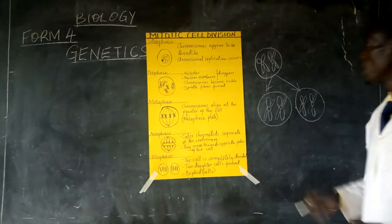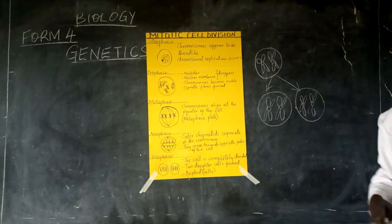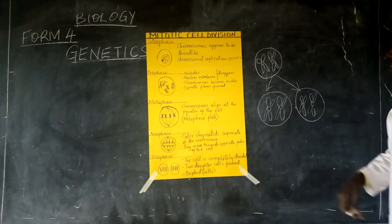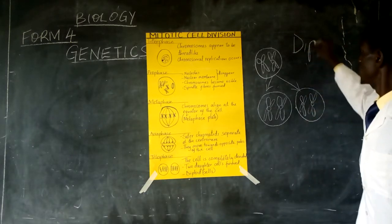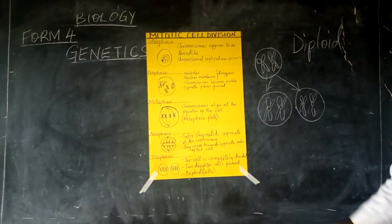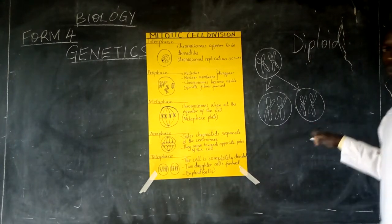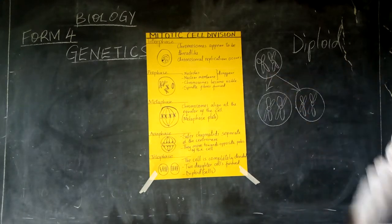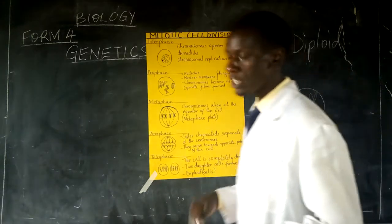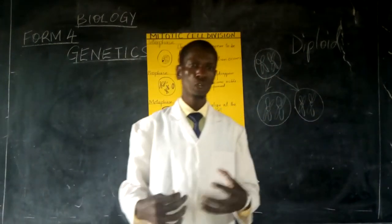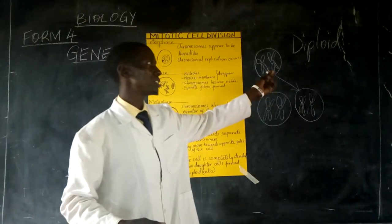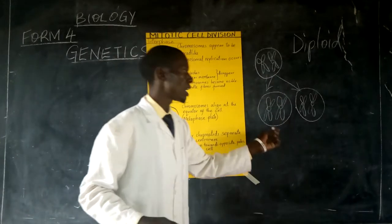Each daughter cell contains the same number of chromosomes as the parent, and we refer to that as mitotic cell division. Since it has the same number of chromosomes as the parent cell, we refer to that as diploid. We may not refer to it as a diploid zygote, but as a diploid daughter cell, because it is a cell which has originated from this one here. This is the parent cell; these ones are the daughter cells.